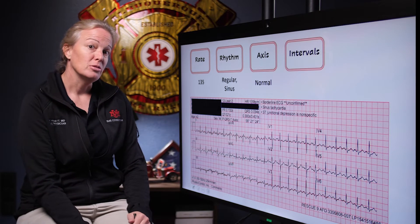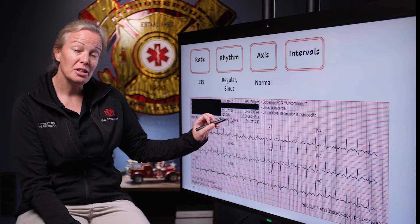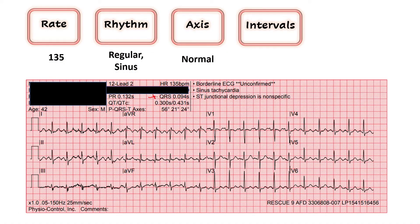Next we move on to intervals. We let the computer do the work here. The QRS is 94 milliseconds — we want that less than 120, so we're good, and they're nice and narrow. Our QTc is 431 milliseconds, which is less than 450. Remember, 500 is where you're at risk for spontaneous arrhythmias. I would call both of those intervals normal.